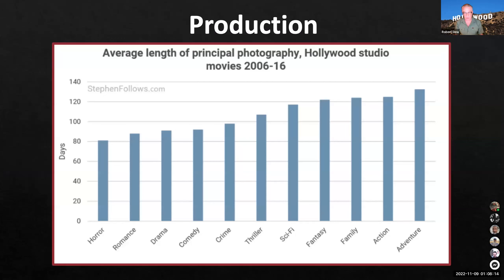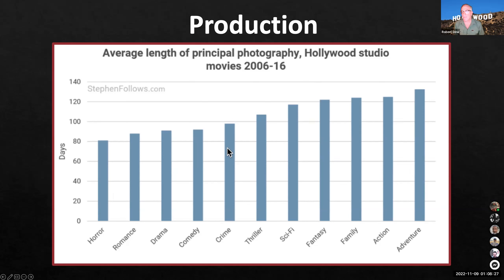Average length of principal photography: horror, romance, and lower-budget genres come in at around three months. Action, adventure, fantasy, sci-fi, and thriller take longer — more like six months for the average time to shoot the film.